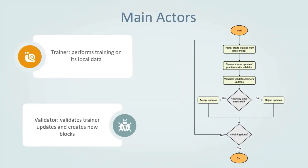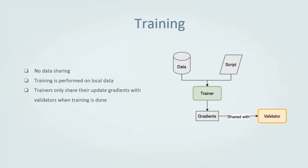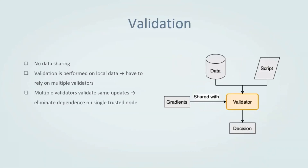In both cases, it is checked if the training is done or not. If it's done, the flow ends; if not, training starts from the new model. In our system, we emphasize no data sharing to maintain data privacy. This is why training is performed on the trainer's local data. The trainer then shares only its updated gradients with the validator. Validation is also performed on the validator's local data. This is why we have to rely on multiple validators, as we cannot assume that a single validator is always trustworthy — this removes the dependency on a single trusted entity.